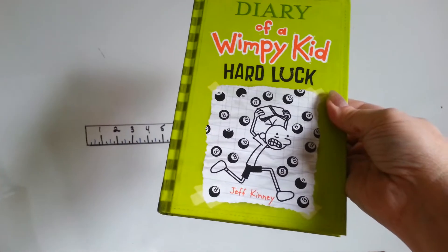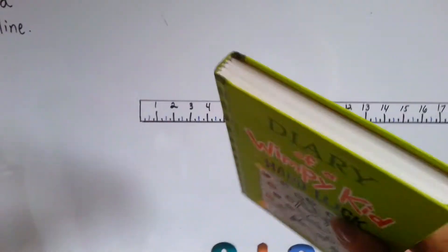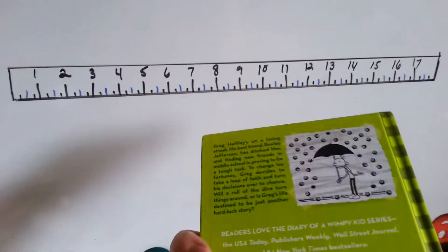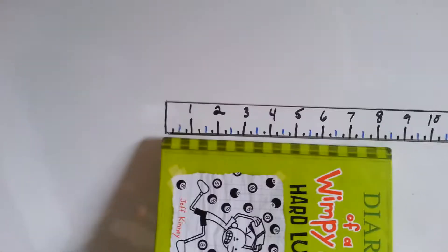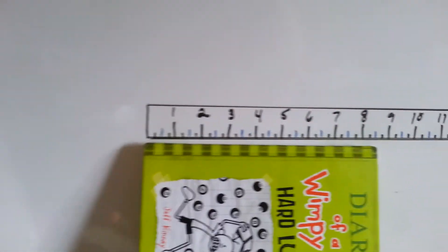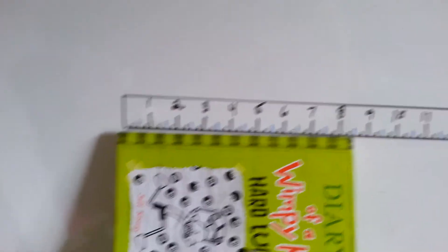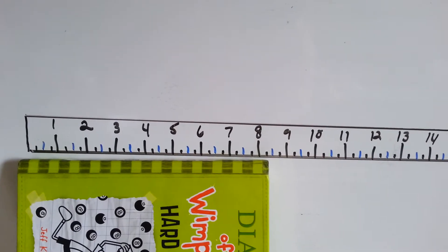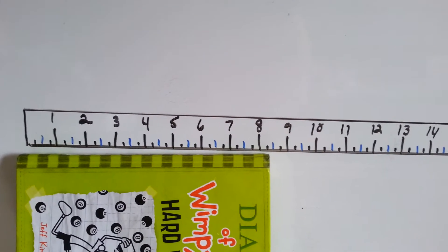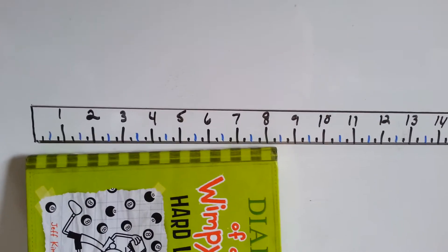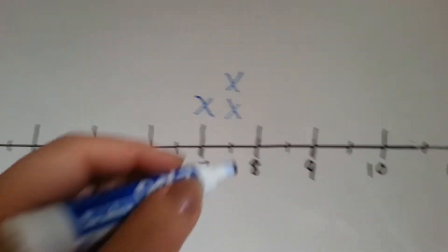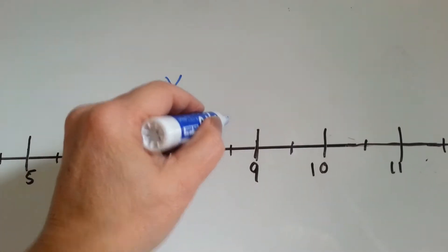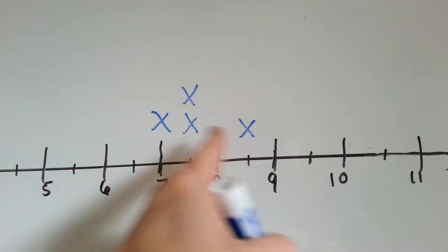Next book, Diary of a Wimpy Kid by Jeff Kinney. This is a hardcover. Very cute story. Let's measure this book. I'm going to line it up over here at the one inch mark. Would you say it's closer to eight, eight and a half, or nine? I think it's close to eight and a half. What do you think? It's a little past eight and a quarter. So, I'd say this is an eight and a half. Diary of a Wimpy Kid is eight and a half. So, in between the eight and the nine, at eight and a half, we're going to put an x.